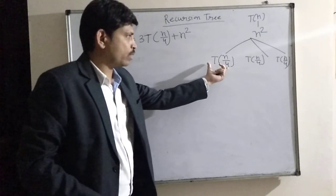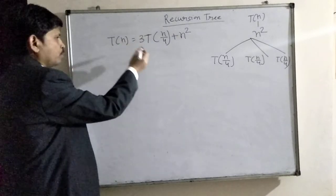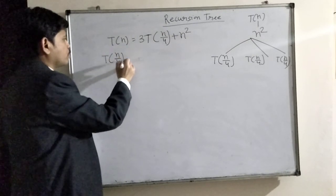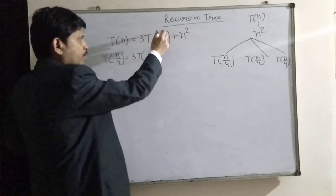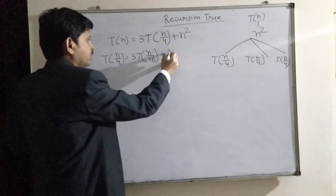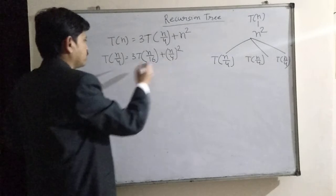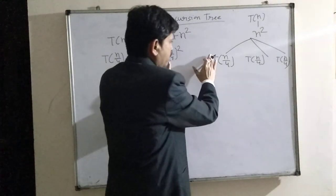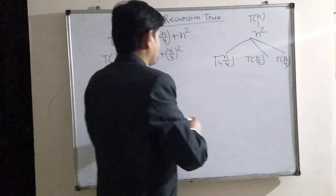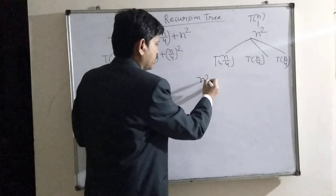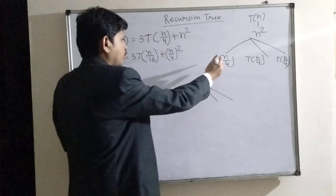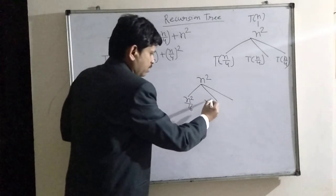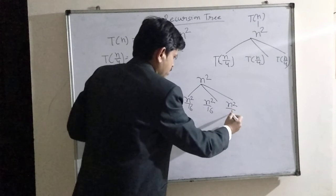Then again we have to find the root node for T(n/4). Place n/4 in the equation: 3T(n/4) gives n/16, plus (n/4)² which is n²/16. So the root node for T(n/4) is (n/4)² = n²/16. We get n²/16, n²/16, and n²/16 for the three children.